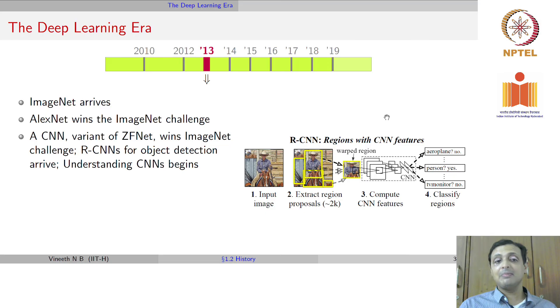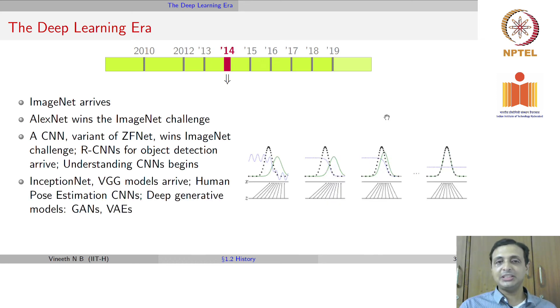Then in 2013 came a variant of a convolutional neural network called ZFNet, which stands for Zeiler and Fergus. It won the ImageNet challenge. Then also region CNNs or R-CNNs were first developed in 2013 for object detection tasks. People also started investing efforts in trying to understand how CNNs work. In 2014, InceptionNet and VGG models arrived. Human pose estimations were developed. CNNs started being used for other tasks beyond just object recognition. Deep generative models such as Generative Adversarial Networks, GANs, and Variational Autoencoders, VAEs, were also developed in 2014.